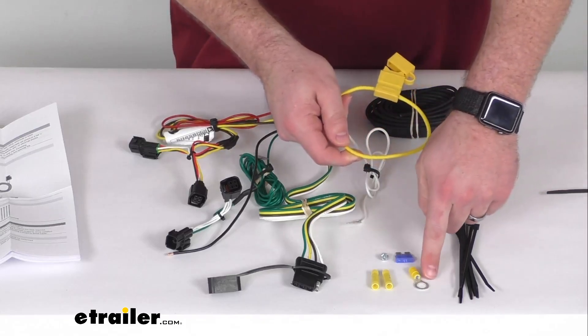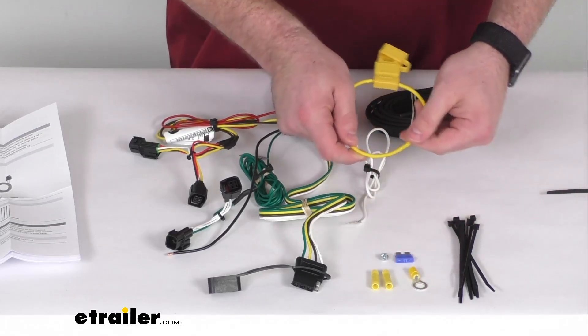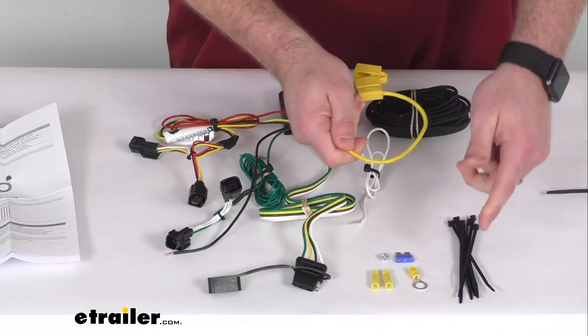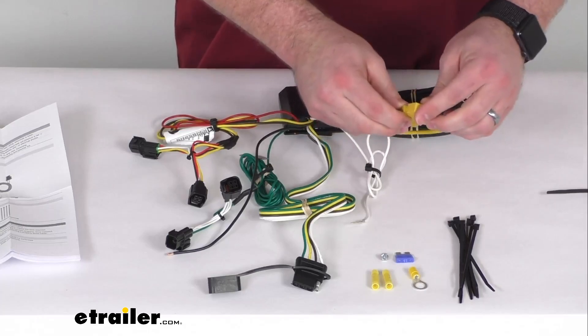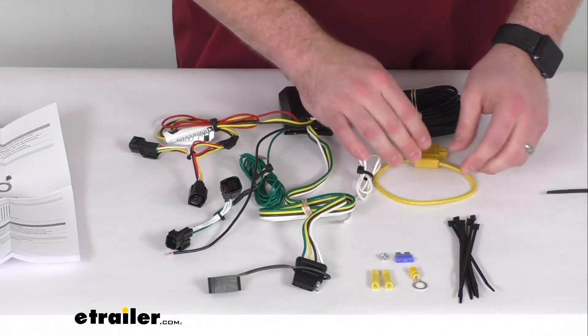And then the other end, they've got a ring terminal here so that you can put that on the positive side of your battery on the positive post. And then you've got your included fuse that will go in place and allow that to be protected.